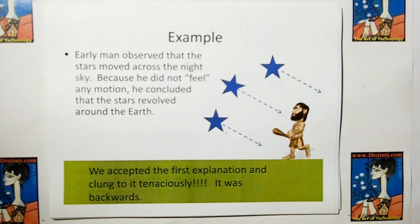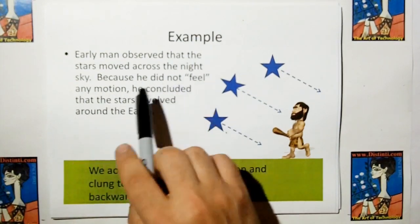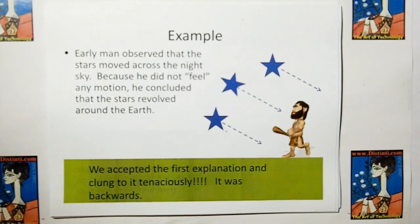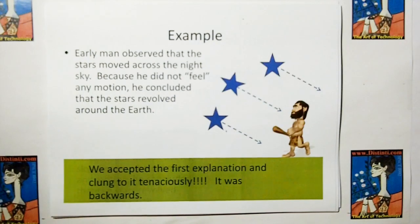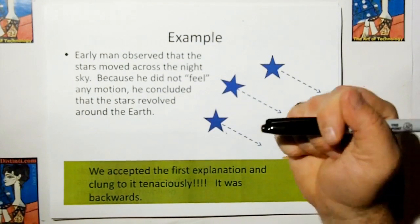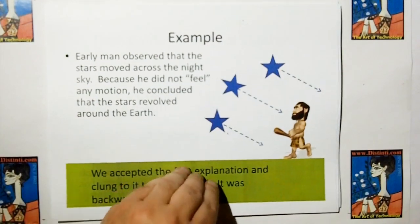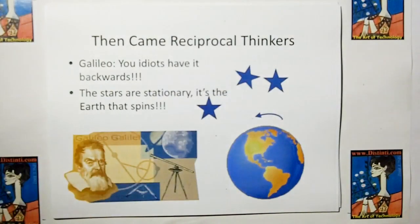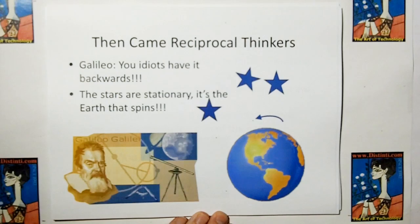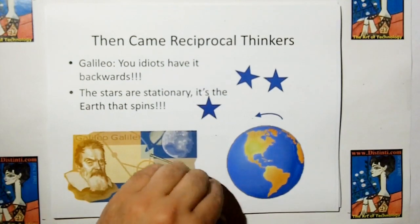Let's give another example. Early man observed that stars moved across the night sky. Because he did not feel any emotion, he concluded that the stars revolve around the earth. And then, you know what, this is the first explanation we had. And you know what, we clung to it tenaciously. But eventually it was found to be backwards because a reciprocal thinker named Galileo, and Copernicus had something to do with it, came in and pretty much said, in no uncertain terms, you guys are idiots, you have it backwards. The stars are stationary, it's the earth that spins.